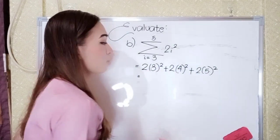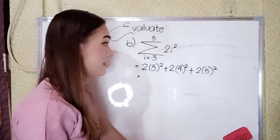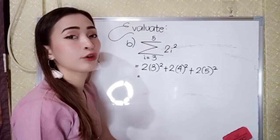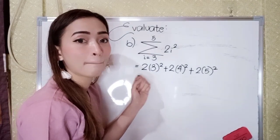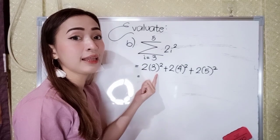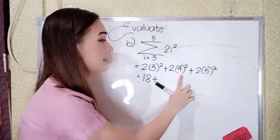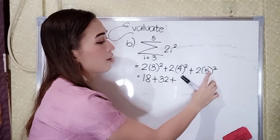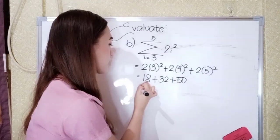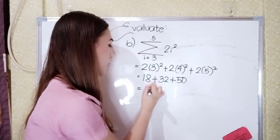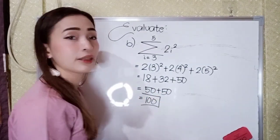Next, let's perform the operation. Since we have the exponent, following PEMDAS we perform the exponent before multiplication. So: 3 times 3 is 9, 9 times 2 is 18. Plus: 4 times 4 is 16, 16 times 2 is 32. Plus: 5 times 5 is 25, 25 times 2 is 50. Now let's add: 18 plus 32 is 50, 50 plus 50 is 100. So the answer in letter B is 100.